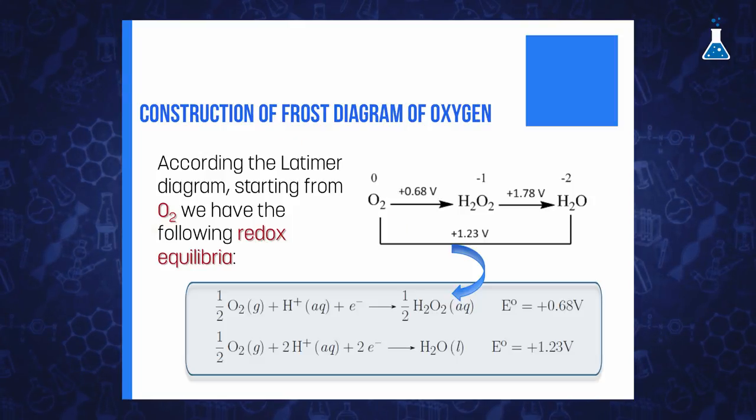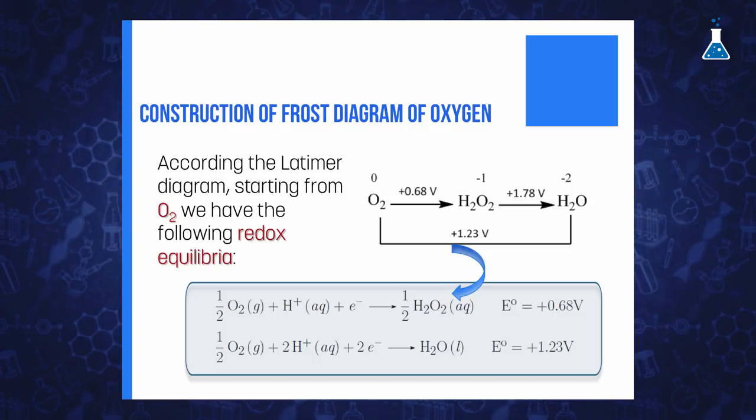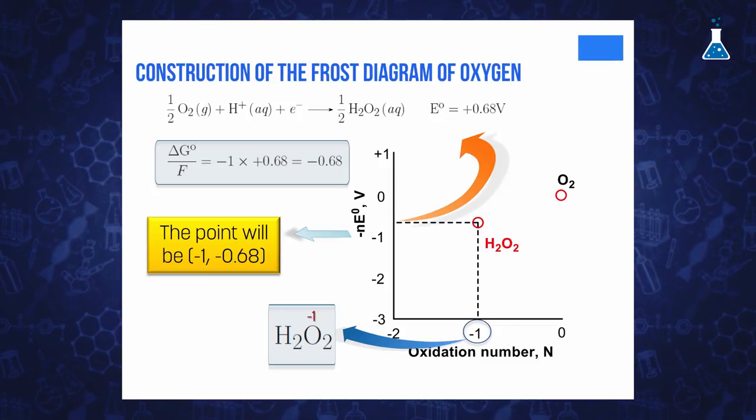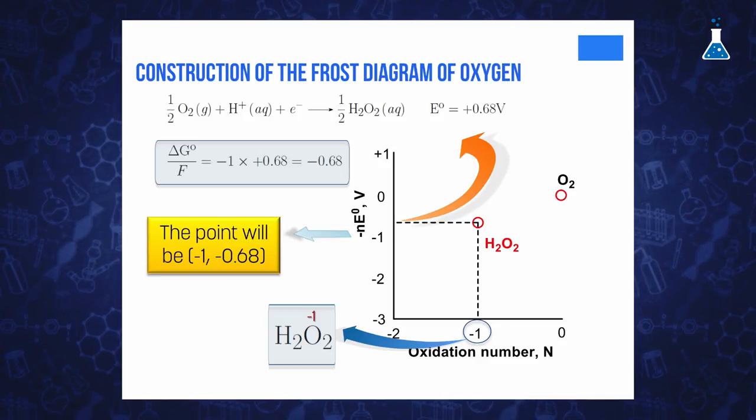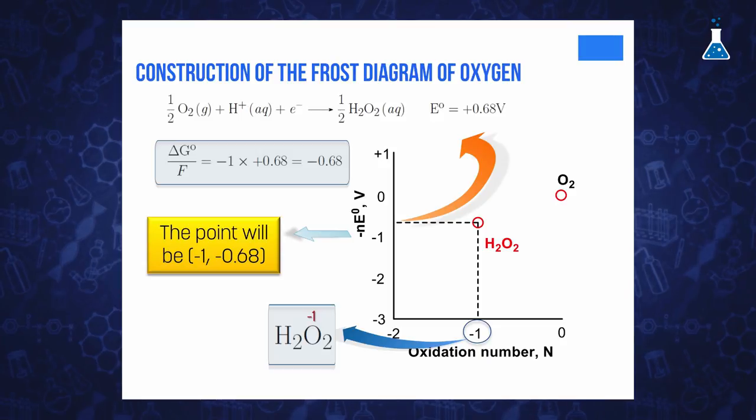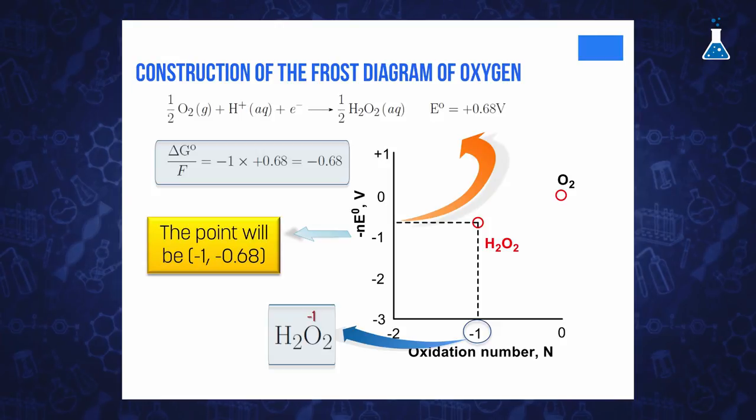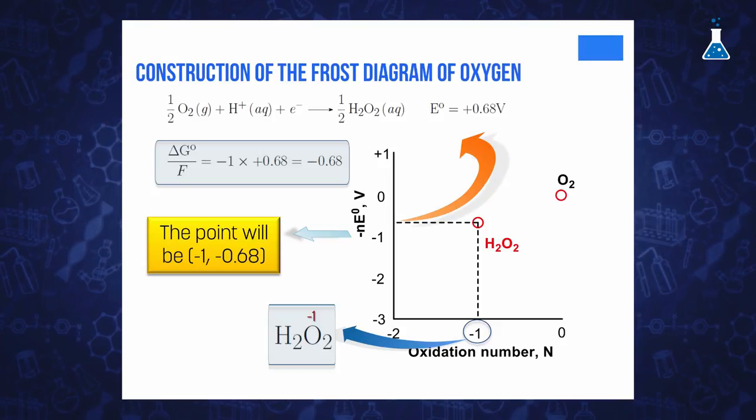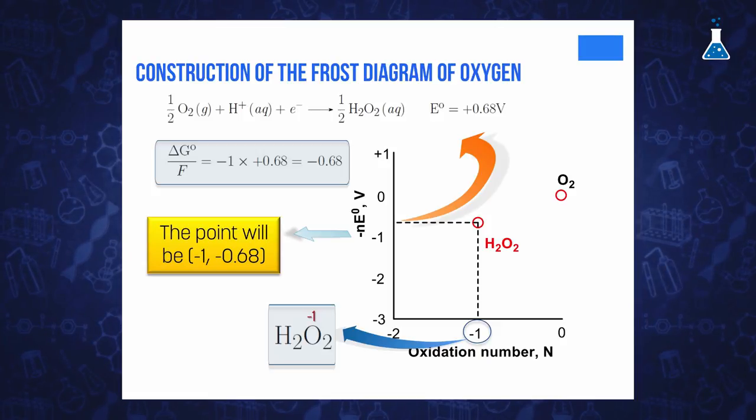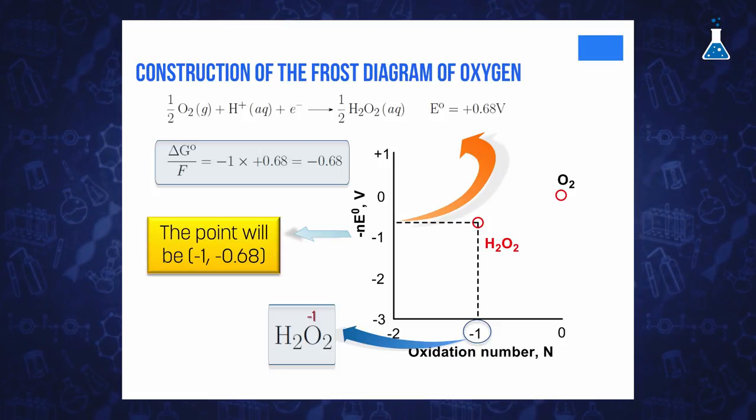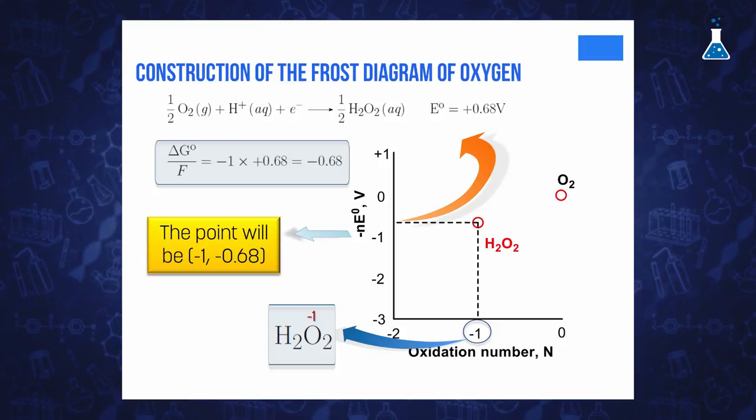Now, if we consider the change in free energy for an atom of oxygen, we will have the following equation. Accordingly, for the first reaction, reduction of oxygen to hydrogen peroxide, we have the point (-1, -0.68), corresponding to the oxidation state -1 of hydrogen peroxide, while the ordinate value will be -0.68, as a result of multiplying the standard redox potential, 0.68, by the number of exchanged electrons, one in this case, and finally multiplied by -1.